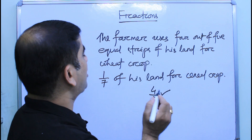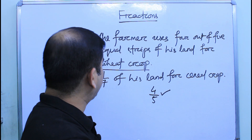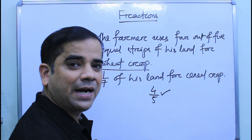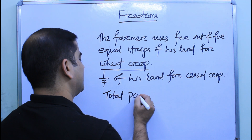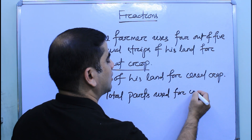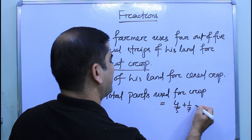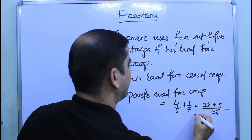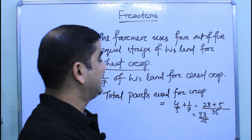To find the total part the farmer uses, we need to add these two values. We write: total parts used for crop equals four-fifths plus one-seventh. The LCM of 5 and 7 is 35. So we get 28 by 35 plus 5 by 35, which equals 33 by 35. This is the total part of the land used for wheat crop and cereal crop.